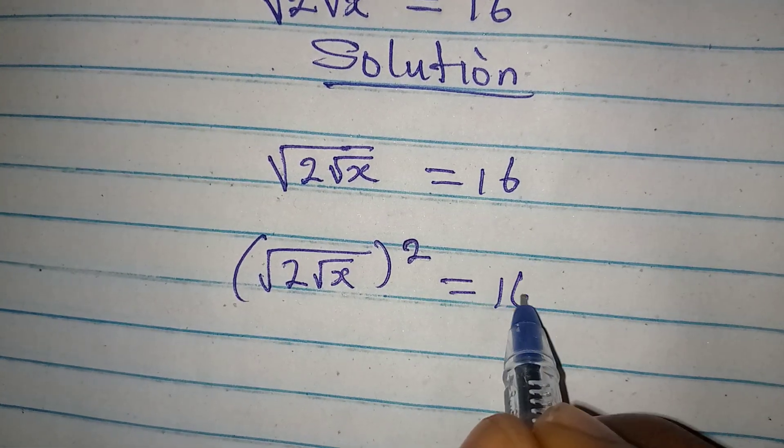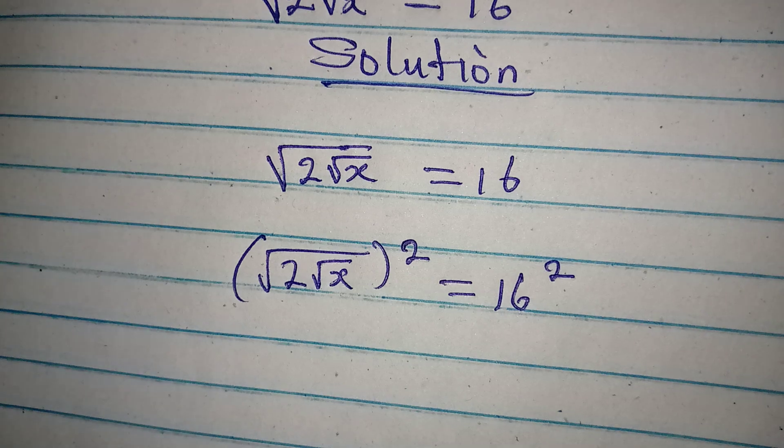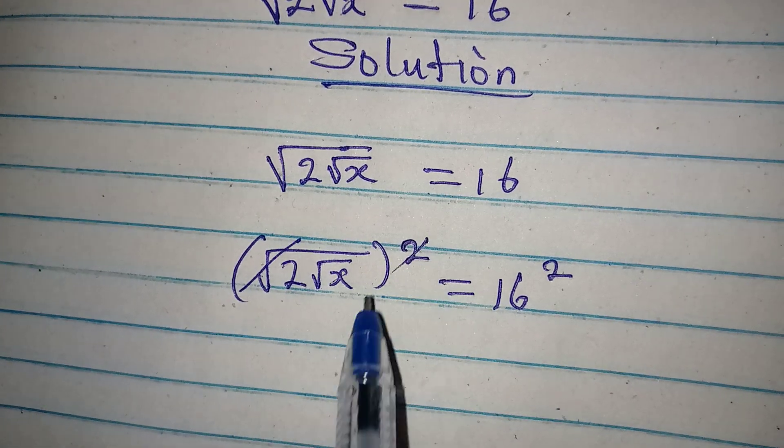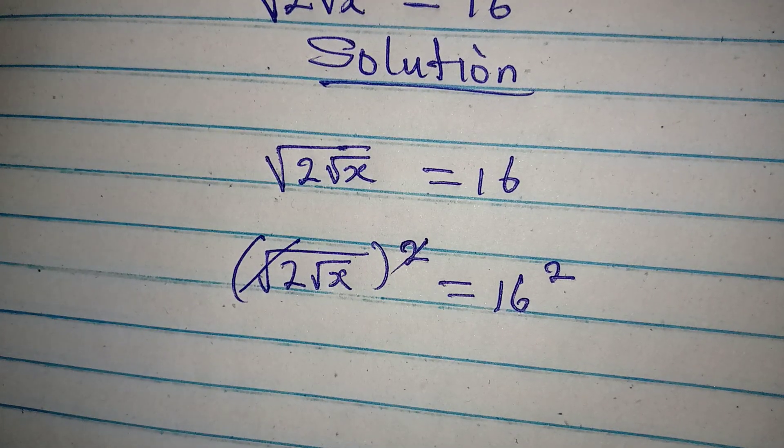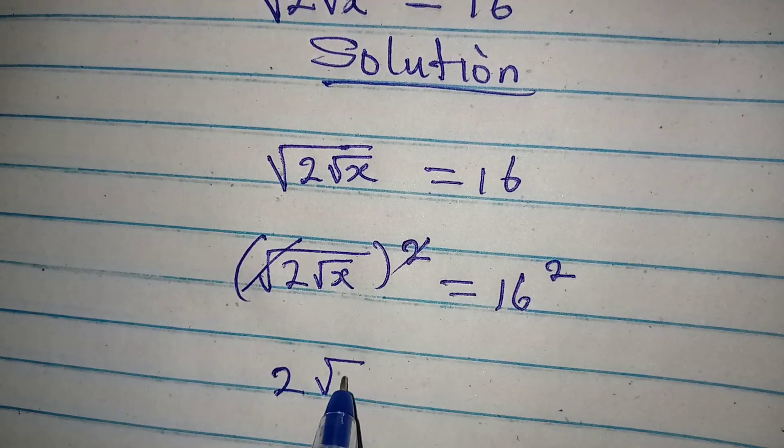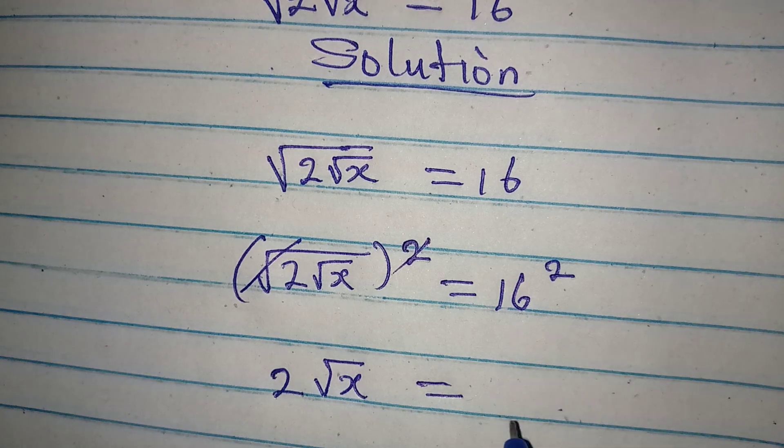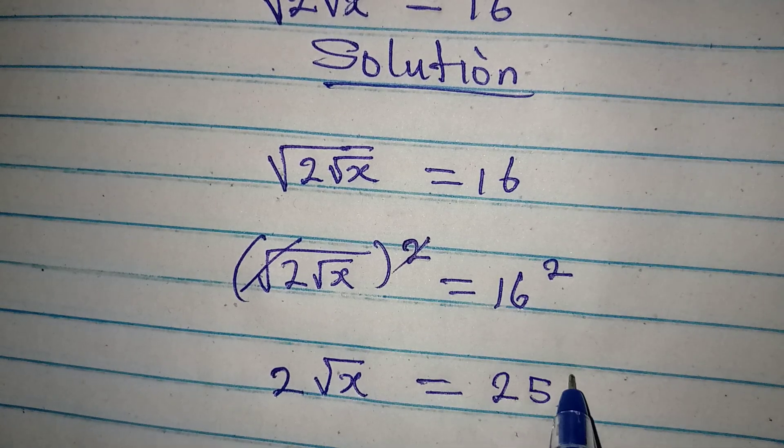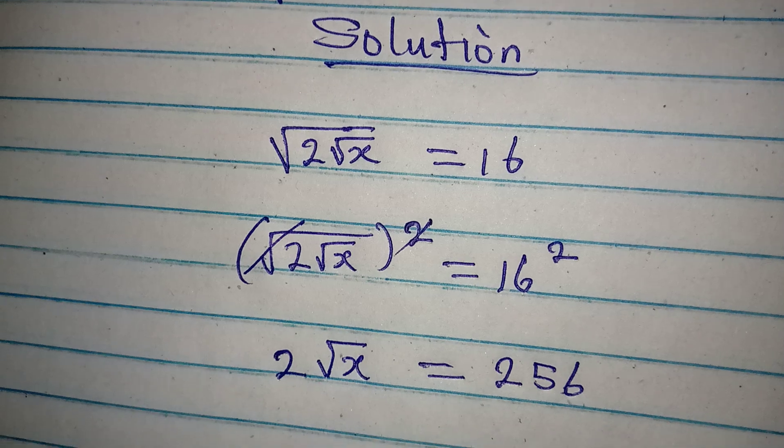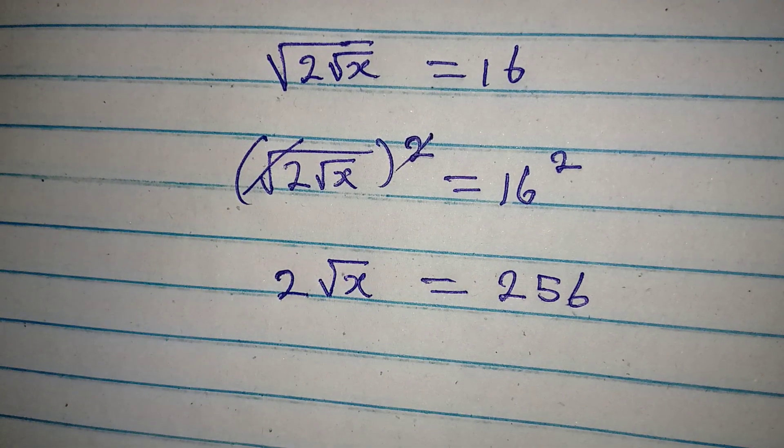Now this will remove this and now we have 2 square root of X being equal to 16 times 16, which is 256. This is what we have now.